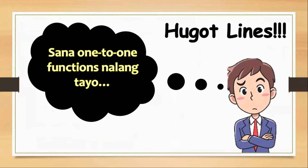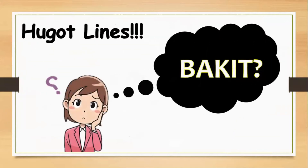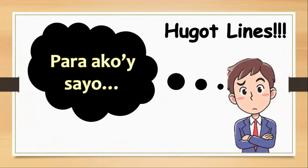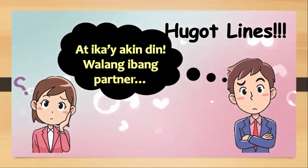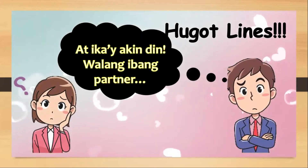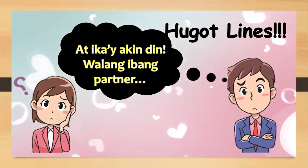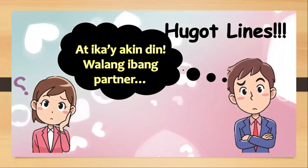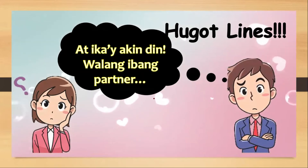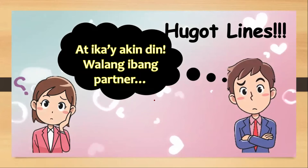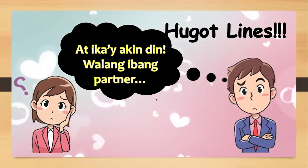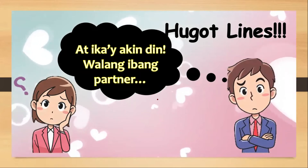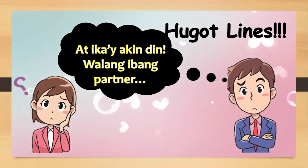I have here a hugot line: 'Sana one-to-one functions na lang tayo.' Why? For a one-to-one function, you can never be a partner of the other groups in the domain. But whoever your partner is, that will also be your partner until the end. That is the nature of a one-to-one function.